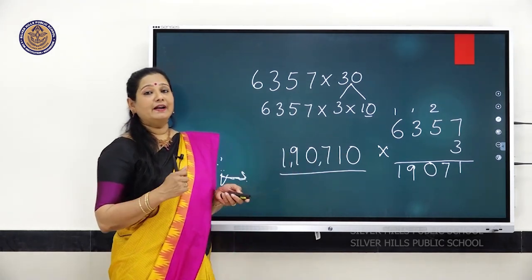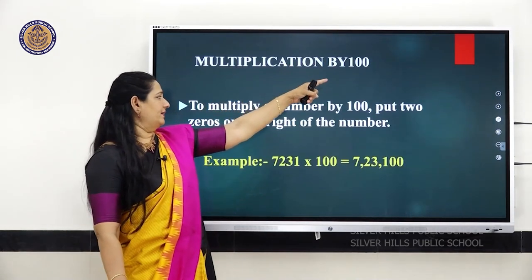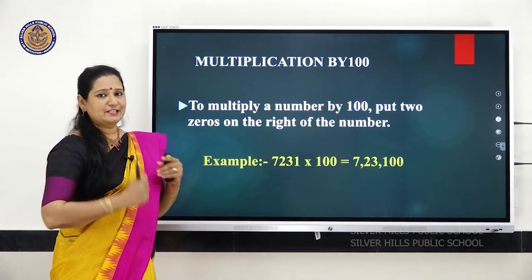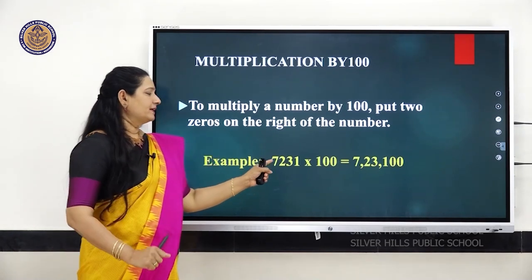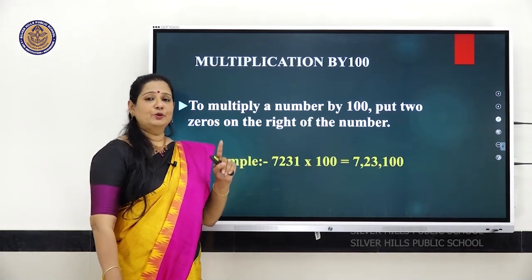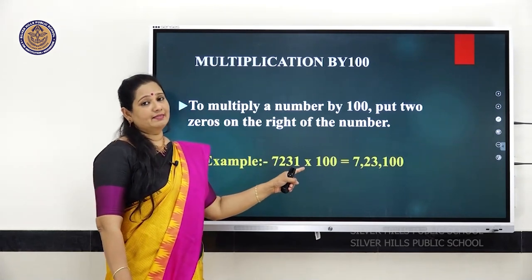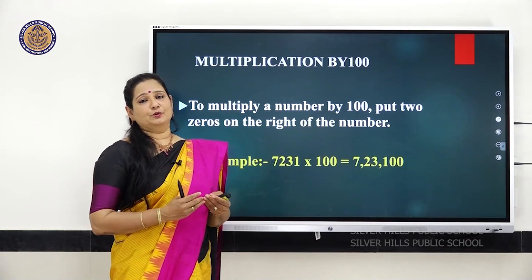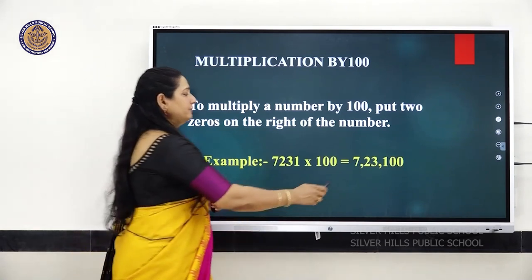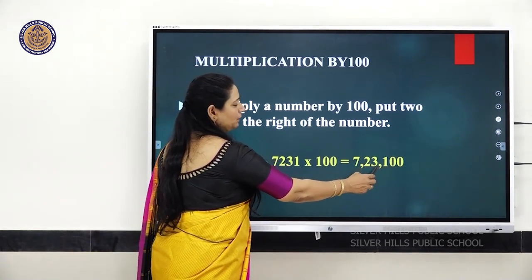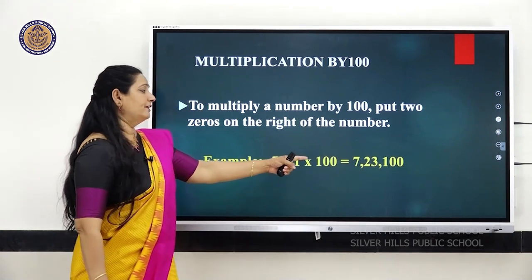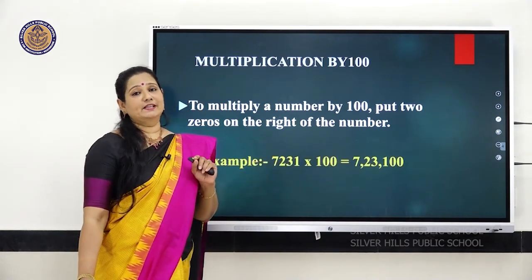Now let us multiply with 100. To multiply a number by 100, put 2 zeros towards the right of the number. For example, 7,231 multiplied by 100 — write the number 7,231, then add 2 zeros. Then put the commas: after 3 digits is the ones period, then the thousands period, then the lakhs period. So your answer will be 7,23,100.